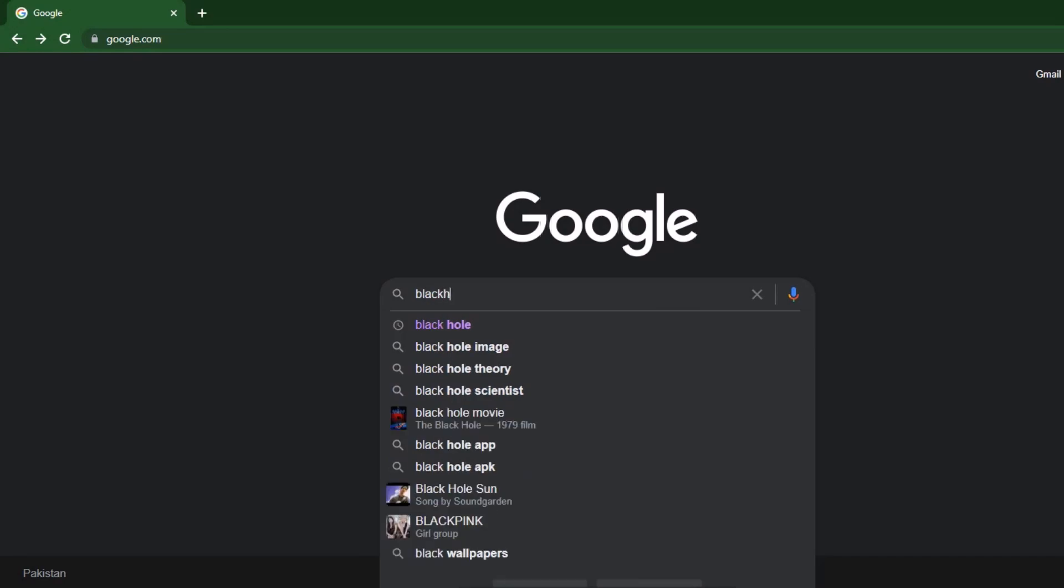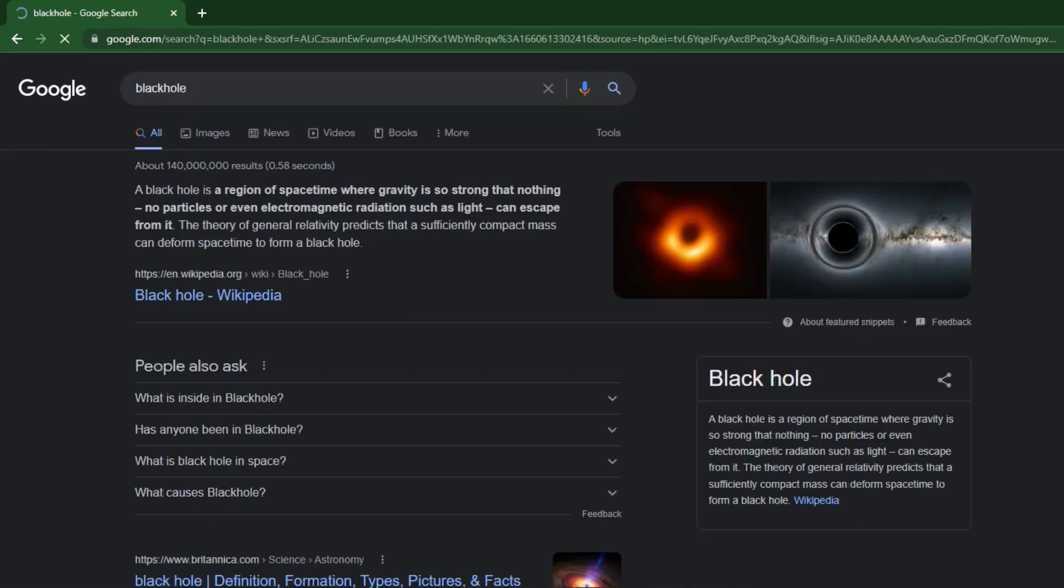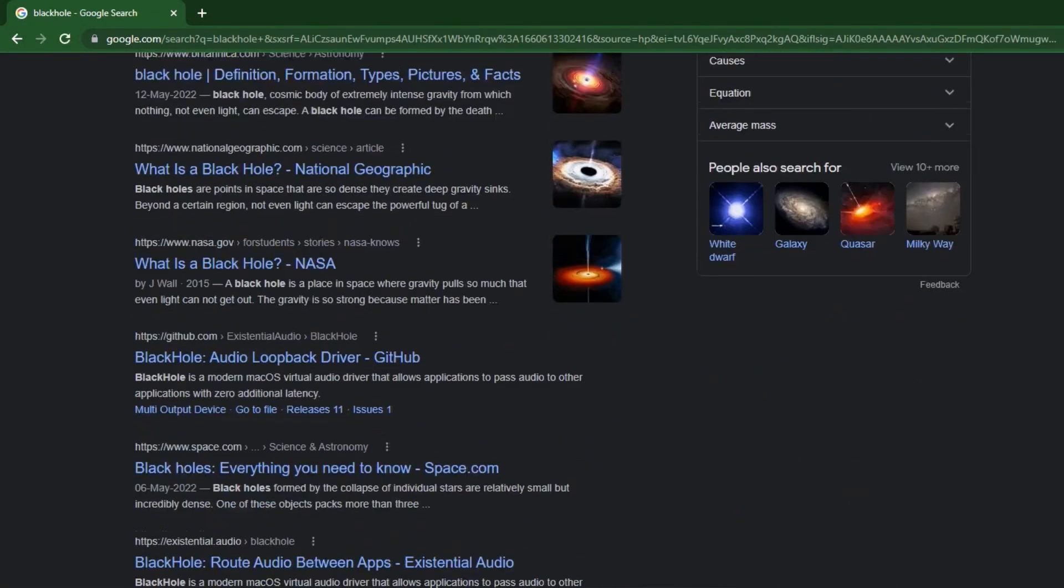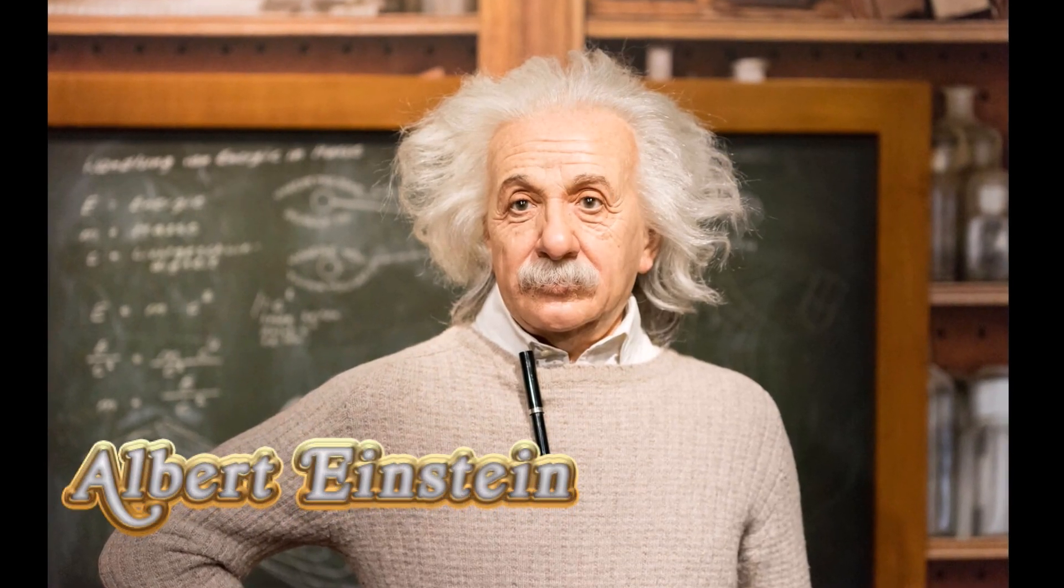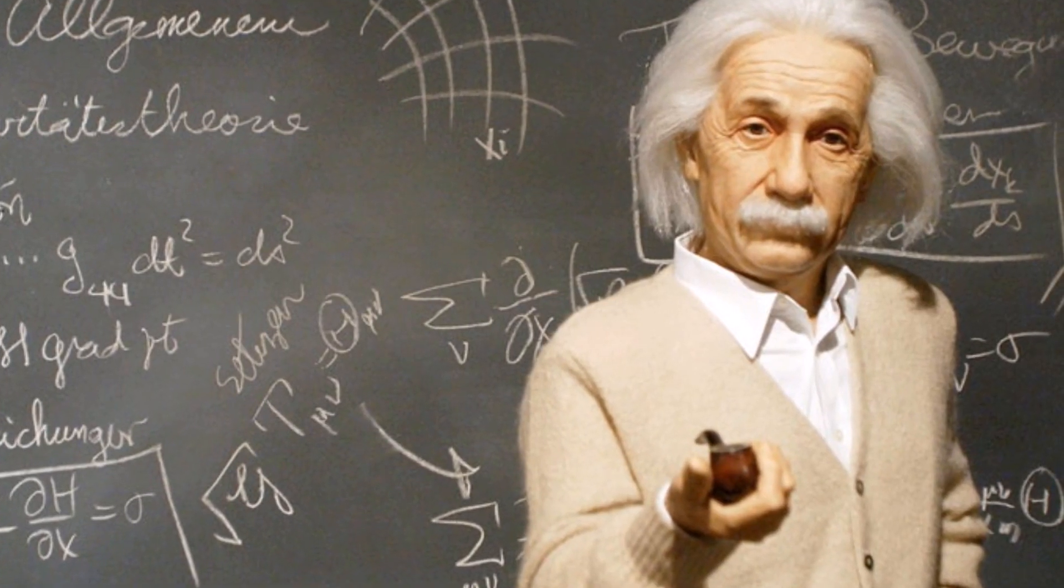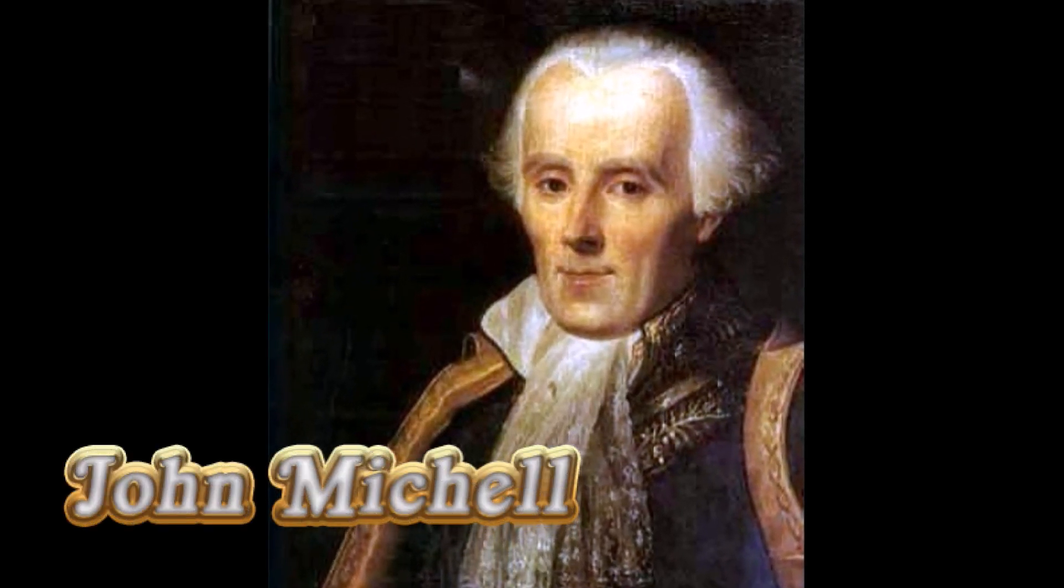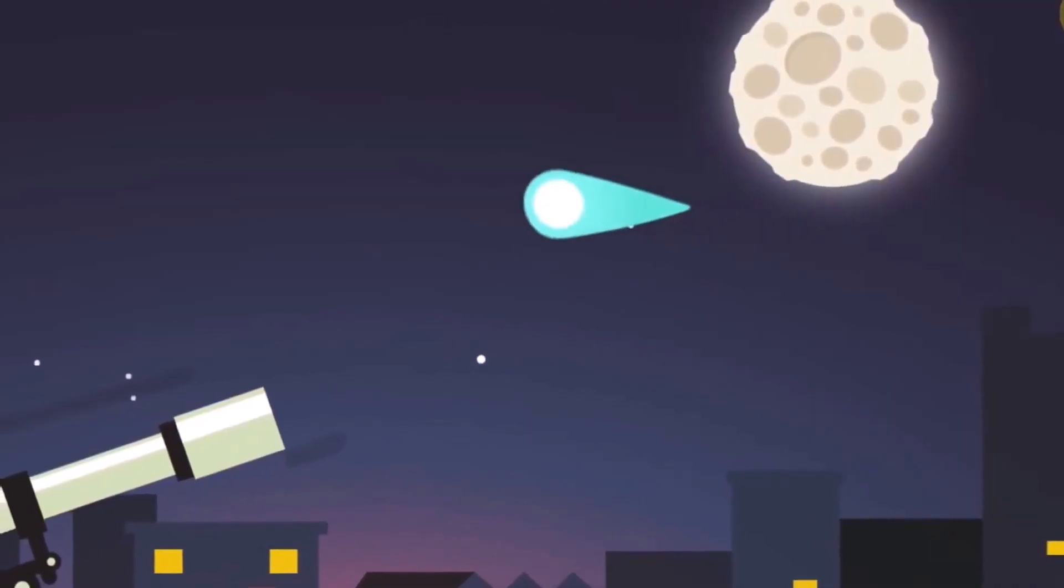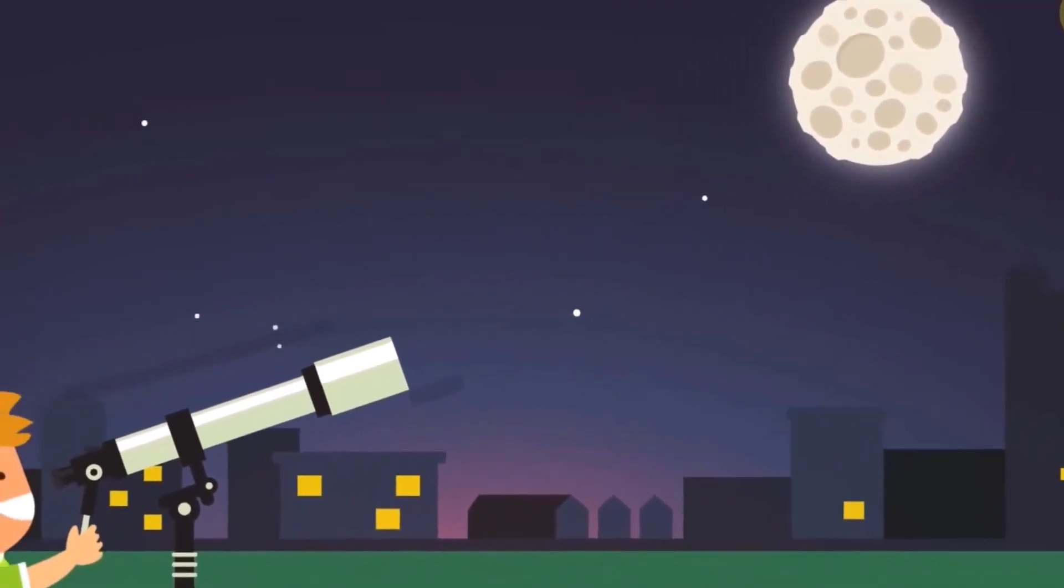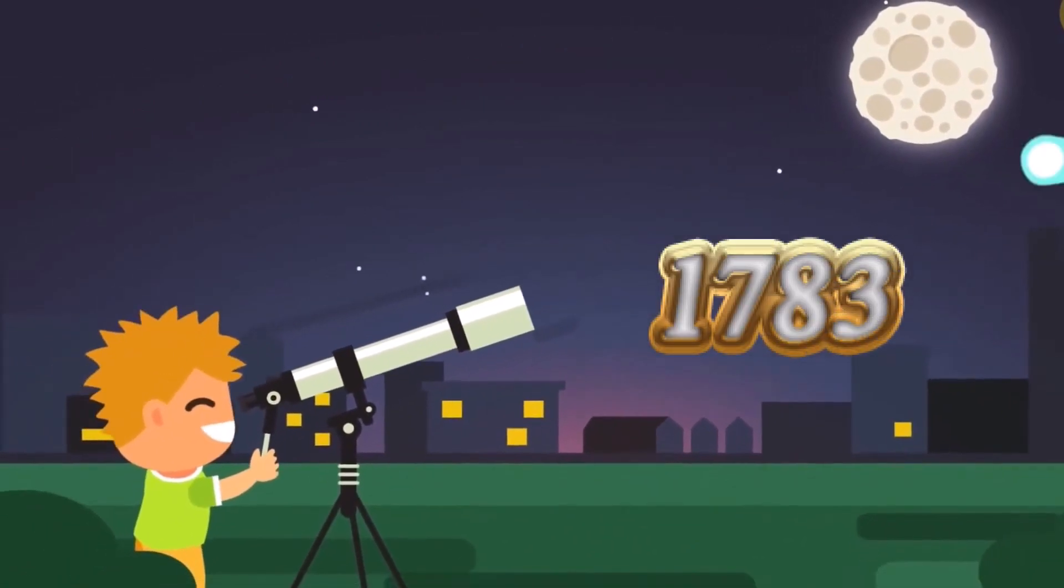If you search the term black hole on the internet, chances are you'll find tons of articles and videos crediting Albert Einstein for its discovery. But that's not the truth. John Mitchell, an English natural philosopher and clergyman, was the first person to introduce the concept of black holes in 1783.